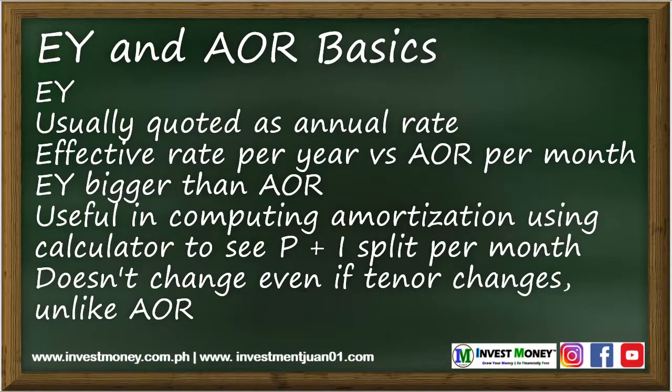EY is usually quoted in annual terms, so it's the effective interest for the year, whereas AOR is usually quoted as a monthly rate. EY will be bigger than AOR, as it measures the effective interest charged to the loan on an annual basis as the loan principal balance diminishes. EY is also more useful in computing the loan amortization schedule to see the split between principal and interest payments. EY as a percent does not change regardless of loan tenor — the peso amount of interest will change the longer the tenor, but EY as a rate will remain the same. AOR, since it is quoted by month, will change in total as the loan tenor becomes longer. Simply put, total AOR increases as loan tenor increases.